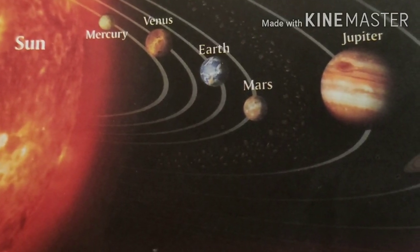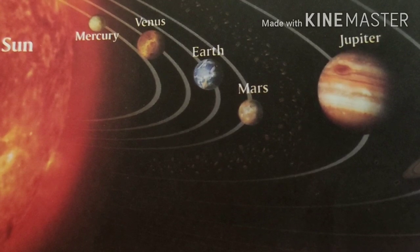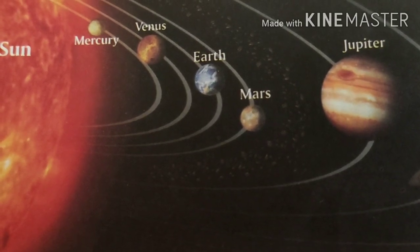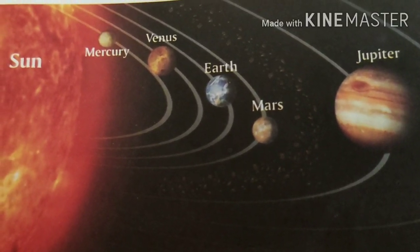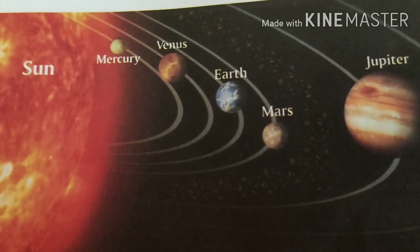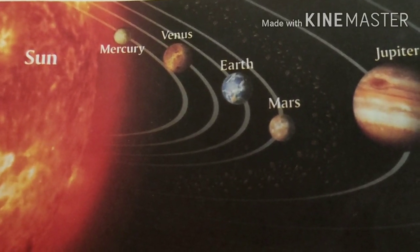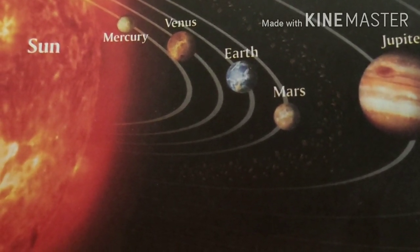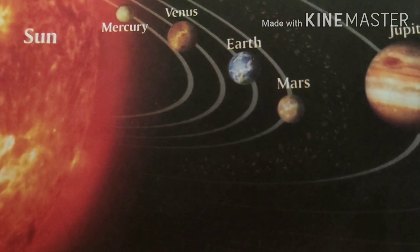The family of the Sun — eight planets and approximately 173 satellites, along with many asteroids, comets, and meteors — makes up the solar system. The word 'solar' is derived from the Latin word 'solaris', meaning sun. The Sun is at the center, and all planets and satellites revolve around it. It is the source of all energy.